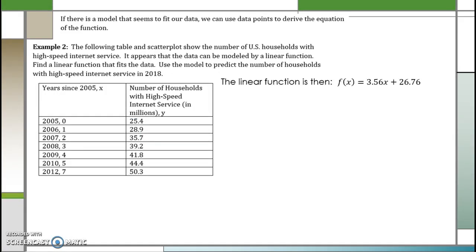Going back to our problem then we see that our linear function is given by f(x) = 3.56x + 26.76. Now we can predict for 2018. Since 2018 is 13 years after 2005, I want to evaluate for f(13). Wherever I see x I'm going to put 13. When I multiply and add I see that f(13) is approximately 73.04 million and we can see that our graph is increasing so that it does make sense with the problem that it's asking.